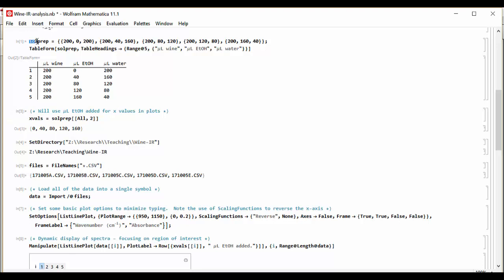I created the table of volumes using this symbol up here, so that means that the actual x values that I'm going to be plotting against, which is the microliters of ethanol, can be found from this symbol.